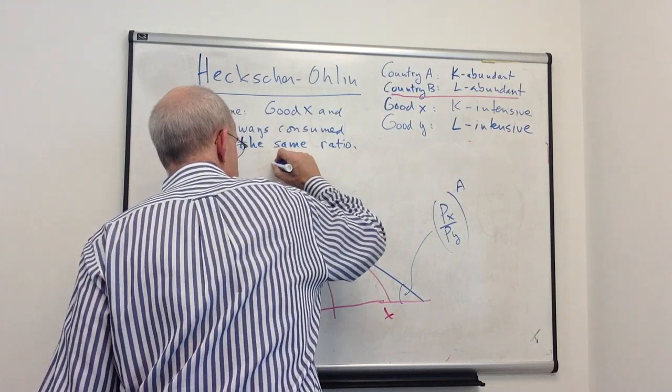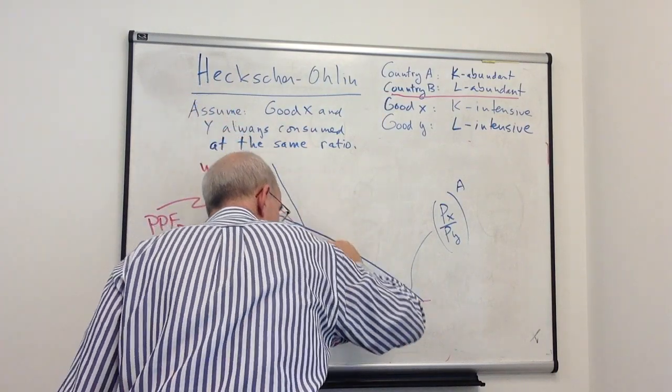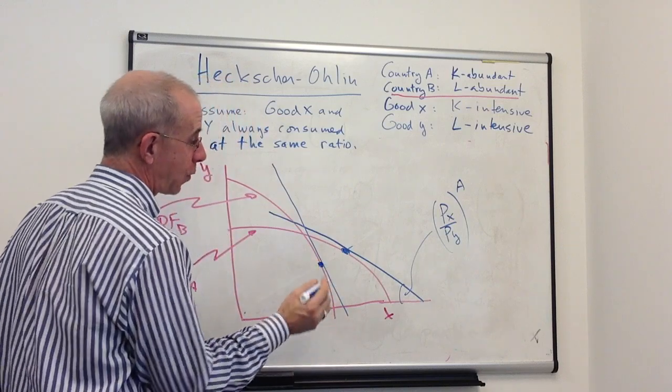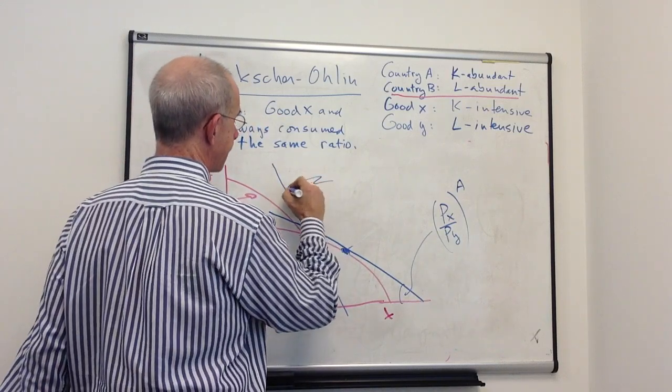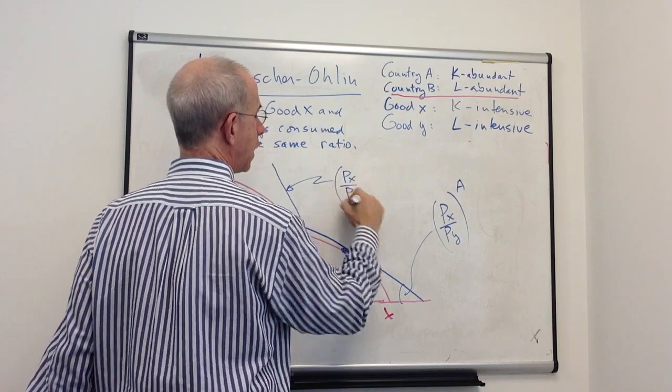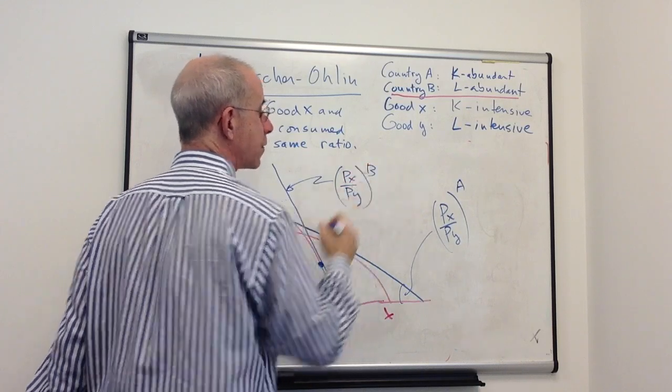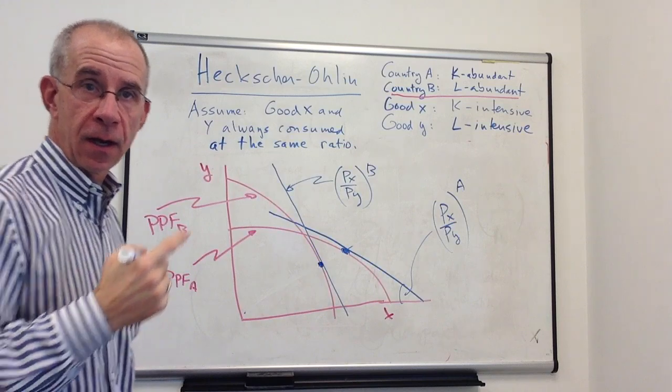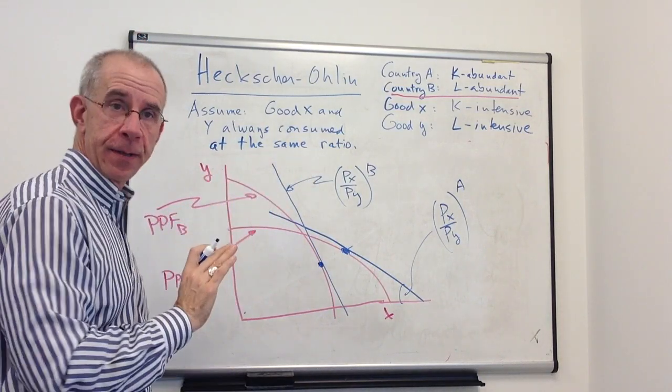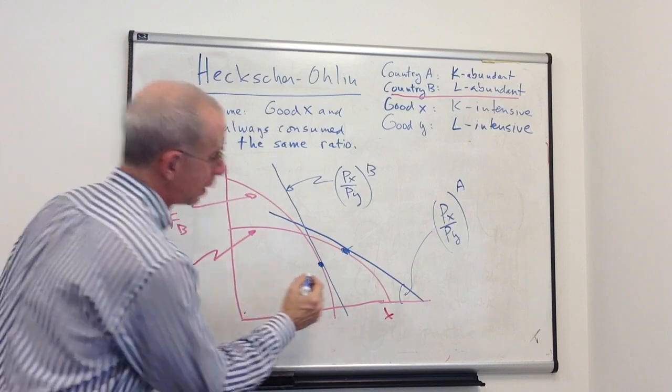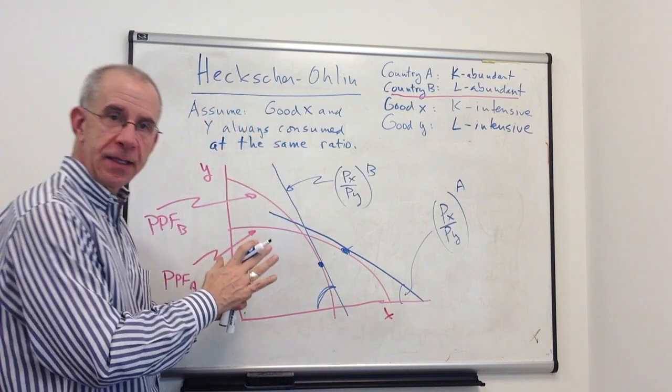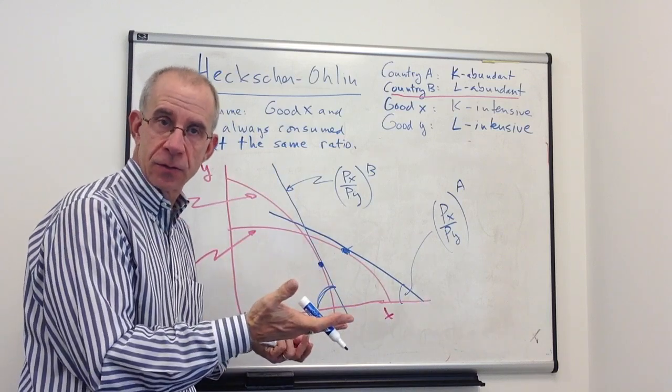And the slope of the PPF at this point is going to give us the relative price of X in autarky in country B. Again, think about this angle.